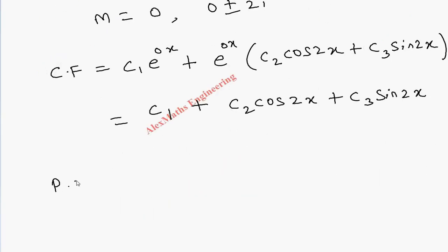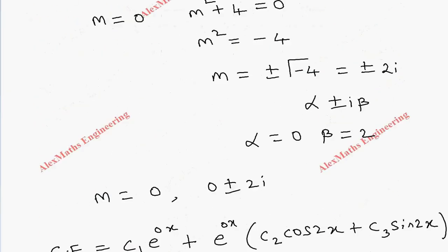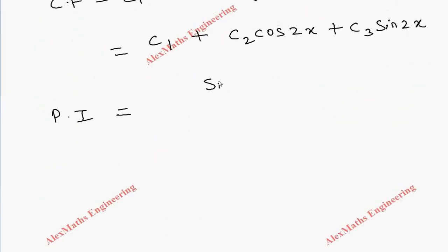So sin(2x) divided by—we have to write D³ + 4D. The term D³ + 4D.